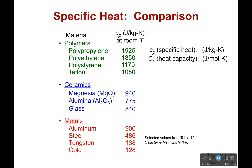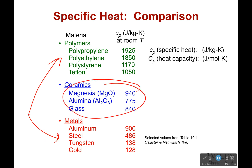Now, specific heats. I mentioned you might be surprised about which one has the highest specific heat. Which of these takes the most energy to change its temperature? If you look at the chart, it's polymers — that's like plastic. Metals are at the bottom, with ceramics being fairly close to the highest of the metals.